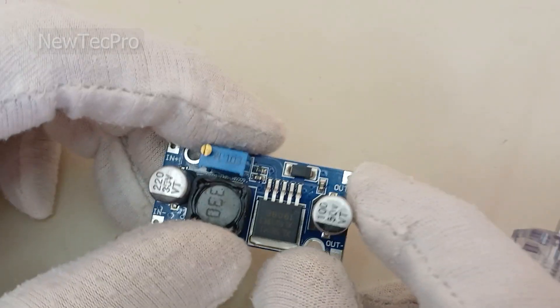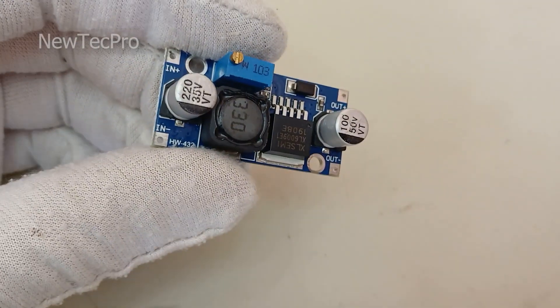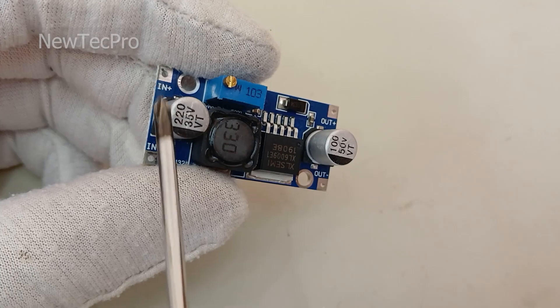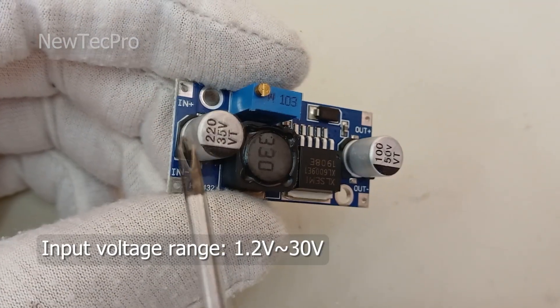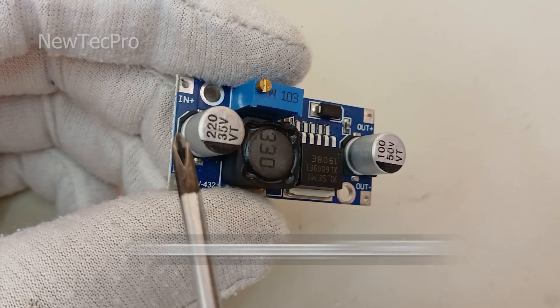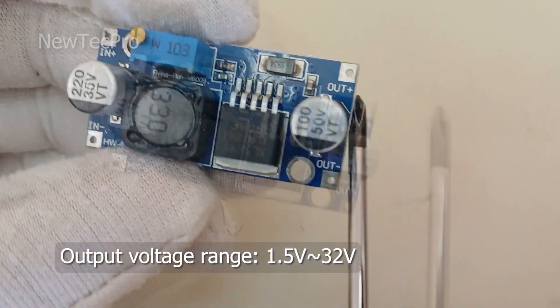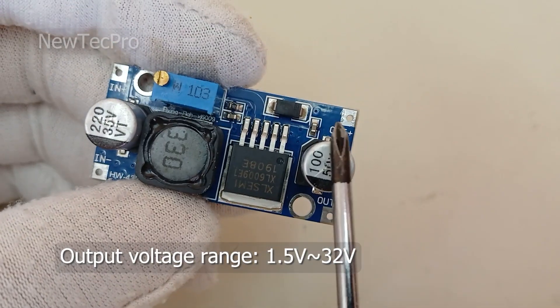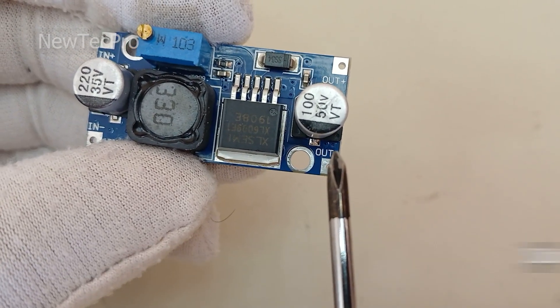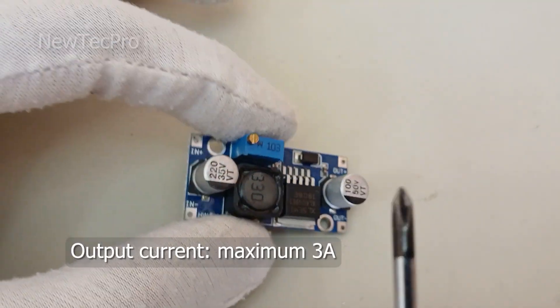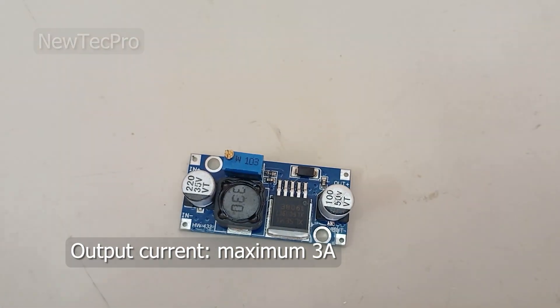With this step-up module, you can convert an input voltage range from 1.2 volts to 30 volts to an output voltage of 1.5 volts to 32 volts DC, with a maximum current of 3 amps.